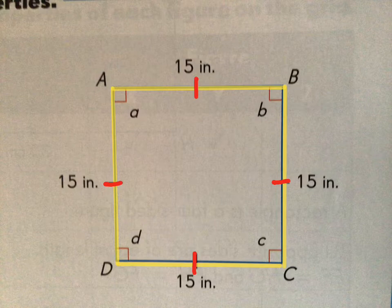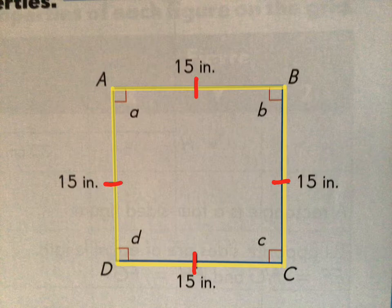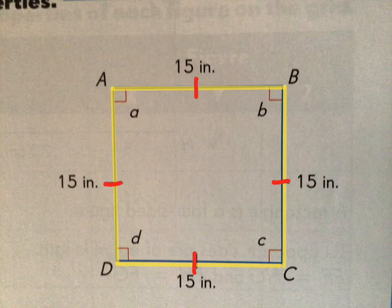So even if these measurements weren't written around the side, if you see four single tick marks and it gives you one side, then you can infer that the other lengths will be the exact same measurement, because in a square it has four sides of equal length.